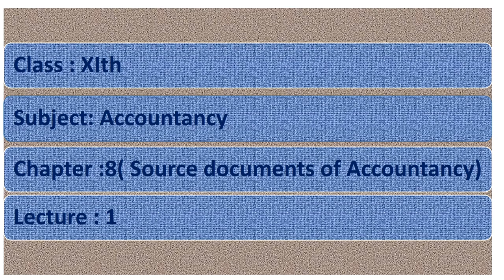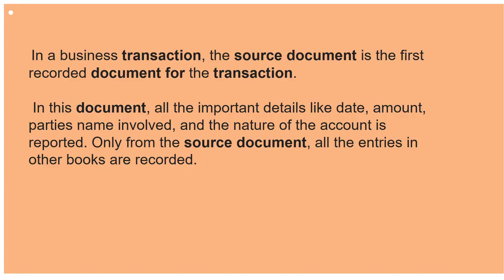Hello Class 11, this is your subject Accountancy, Chapter Number 8: Source Documents of Accountancy, Lecture Number One. In this lecture we shall study the different types of source documents of accountancy. A source document is the first recorded document for a transaction. It contains all important details like date, amount, parties' name, and the nature of the account to be reported. Only from source documents are all the entries in other books recorded.